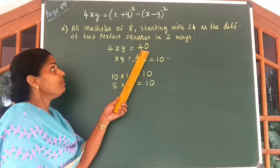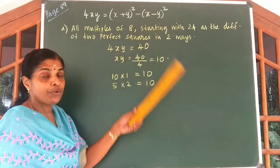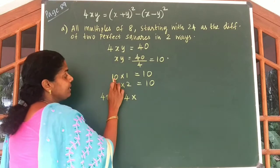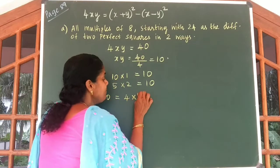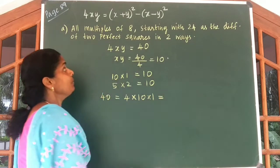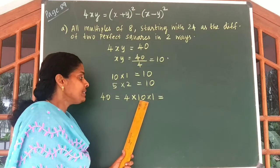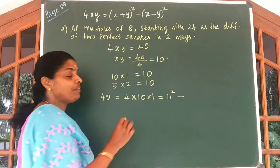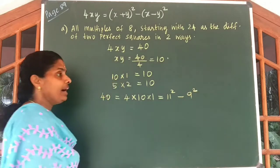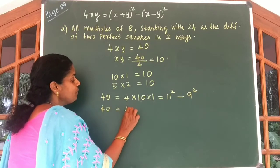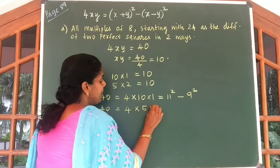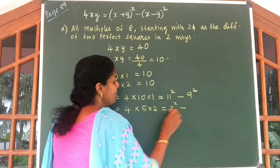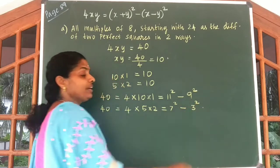Now let us write 40 as the difference of two squares in two different ways. We can write 40 is equal to 4 into 10 into 1, which gives you x plus y whole square, that is 10 plus 1 whole square, giving 11 square minus 10 minus 1 whole square, which gives 9 square. Otherwise, we can write 40 is equal to 4 into 5 into 2, that is 5 plus 2 whole square, which is 7 square minus 5 minus 2 whole square, equal to 3 square.